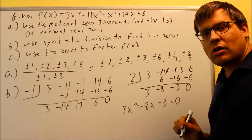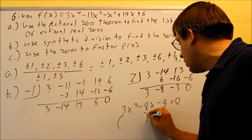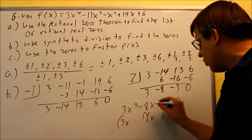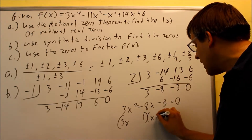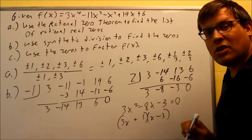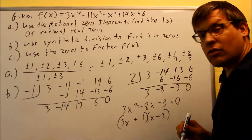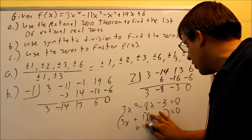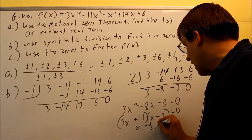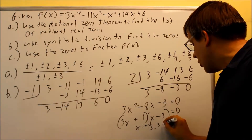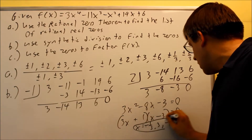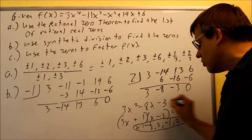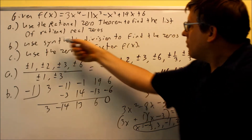What I have left is 3x squared minus 8x minus 3 equals 0. When I factor that, I get 3x and x, using 1 and 3. I want the middle term to be negative 8, so I get negative 9 plus 1, giving me negative 8. So the factored form is (3x + 1)(x − 3) = 0, giving zeros negative 1 third and 3. Don't forget the two we found from the graph: negative 1 and 2. So the full list of rational zeros is negative 1 third, 3, negative 1, and 2 — all four x-intercepts.